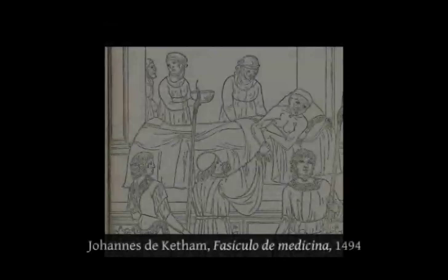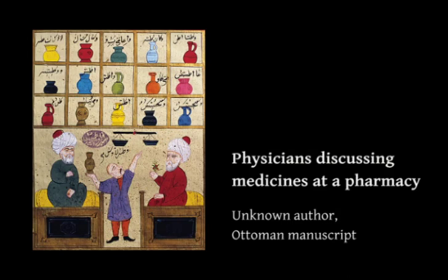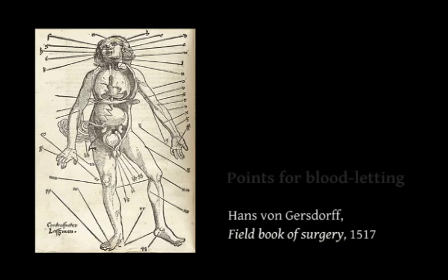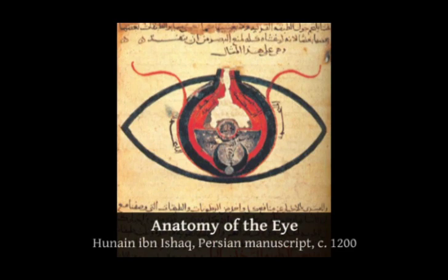Moreover, surgery was considered the domain of the outer or external parts of the body — the surface of the body — as opposed to the internal parts, which were the object of pharmacy and physic. As such, surgery traditionally had to do with wounds, as we also see in the popular pictures of the wound man, a kind of map of all possible wounds of the body. Surgery also dealt with swellings of all kinds, the practice of bloodletting — a very popular treatment for many medical and surgical conditions — and various conditions like toothache, bladder and kidney stones, eye conditions such as cataracts, and so on.